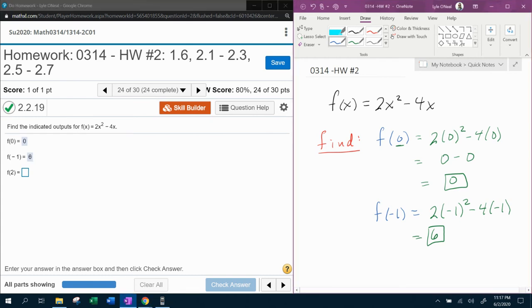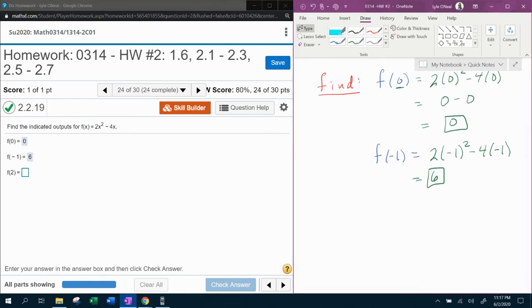And we have one more function value to find. And that is f of 2. So again, that says to replace. I'm sorry. Let me stay consistent here. Color consistency is important. All right. 2 times 2 squared minus 4 times 2. And I think I am going to work this one out mentally. 2 squared is 4. 4 times 2 is 8. 4 times 2 is 8. 8 minus 8 is 0.